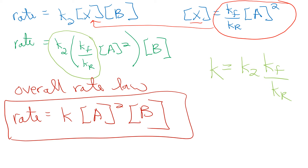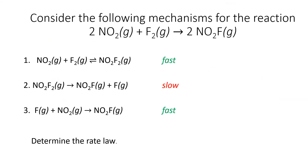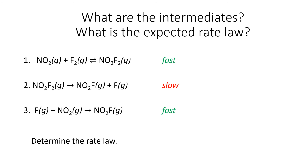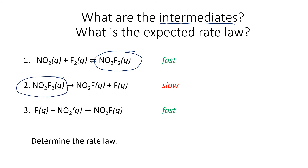Let's look at one more example using compounds. We have the following mechanism for a reaction, again with two fast steps and one slow step. The question is to determine the rate law. First, let's identify the intermediates — intermediates are NO2F2 and elemental F as an atom.